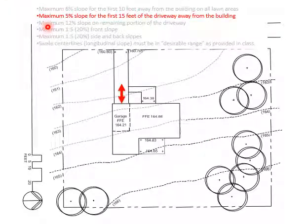The next standard is that you're allowed a 5% slope for the first 15 feet of the driveway from the building. So the first 15 feet from the garage going down the driveway, you're allowed to have a 5% slope.